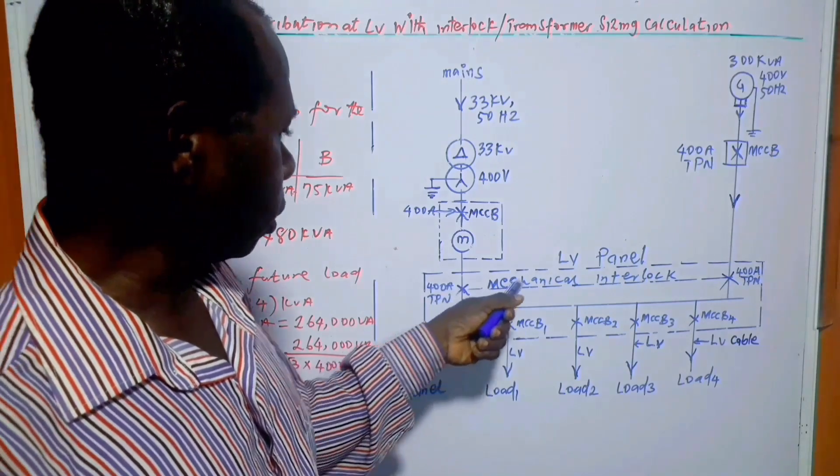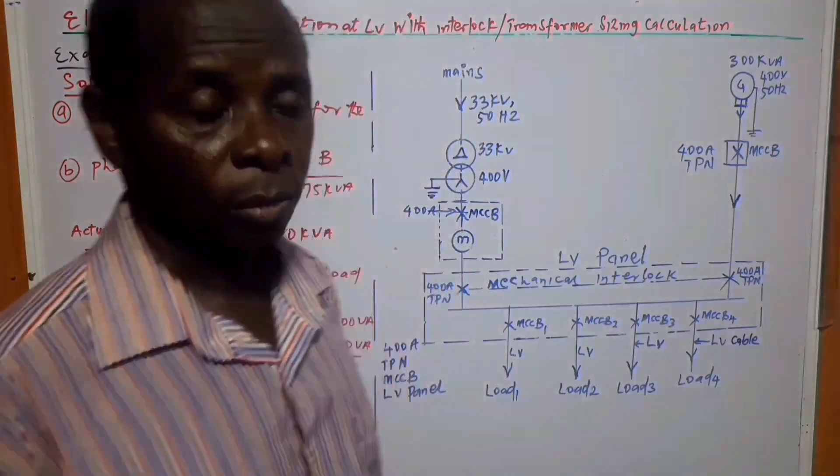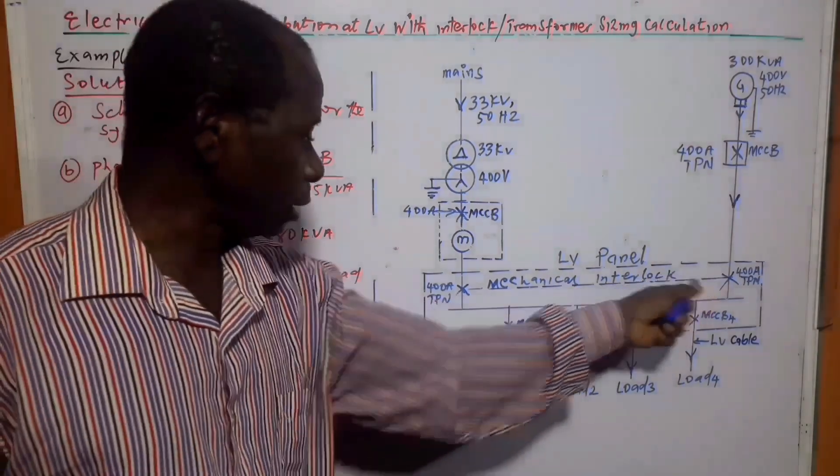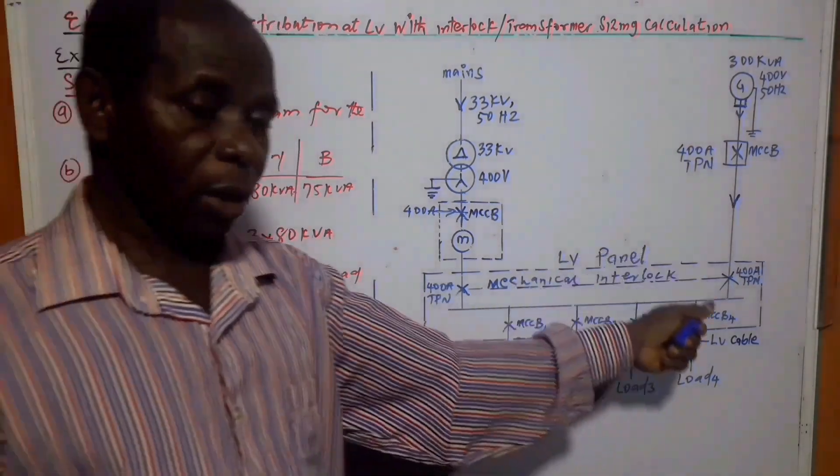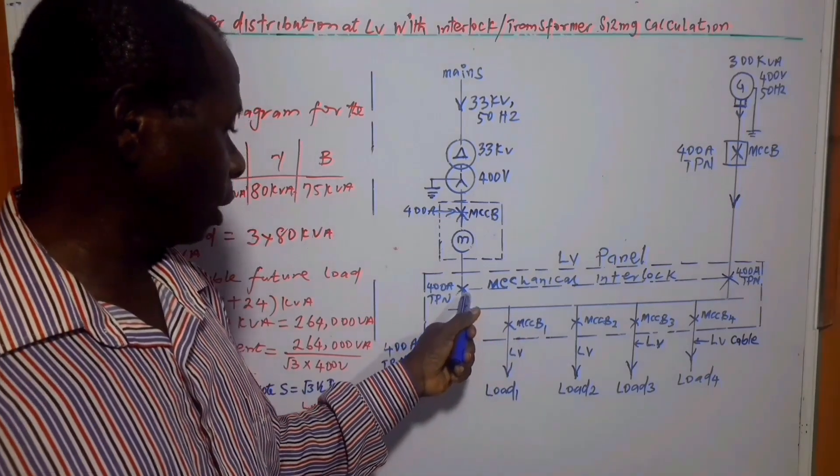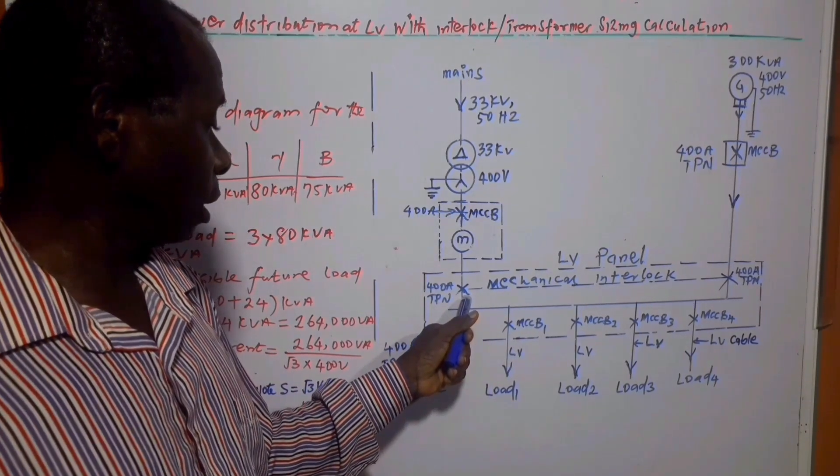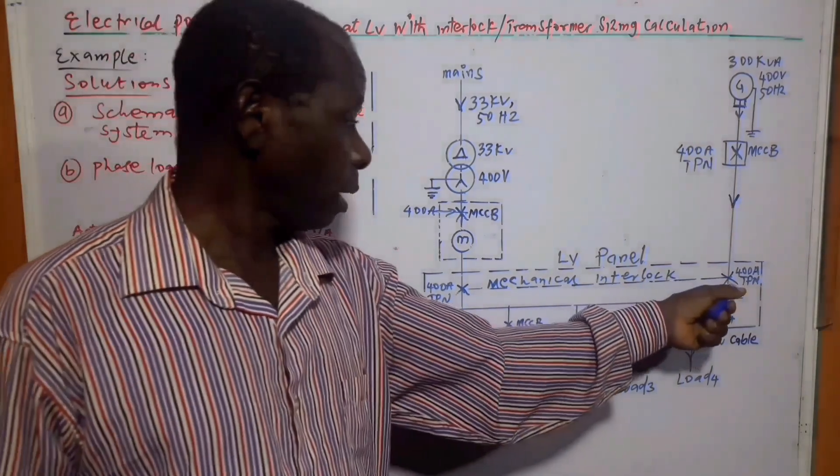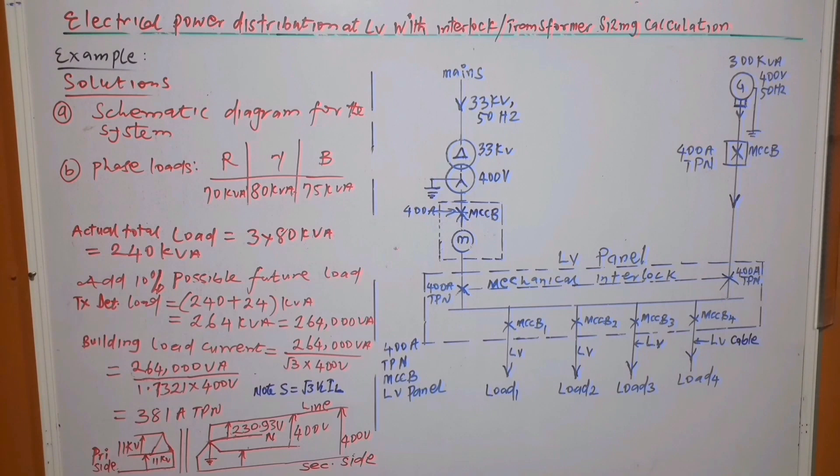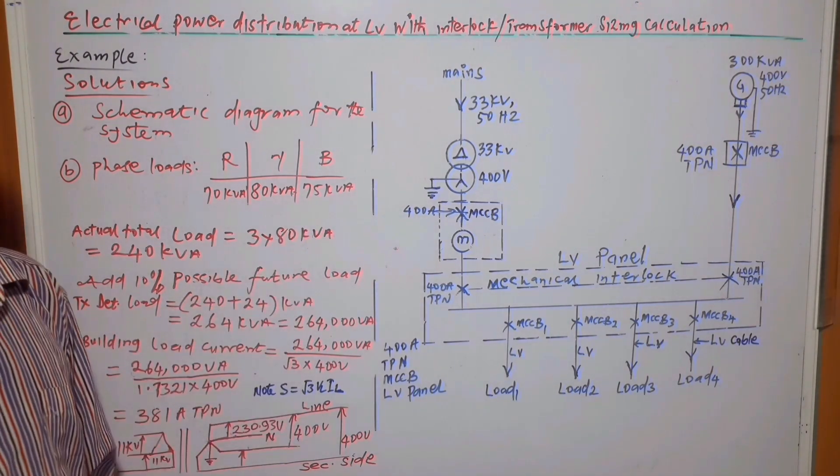And when the power is restored and the generator will be shut down, so the two will alternate. The main circuit breaker will be closed while this one will be opened, and that is the schematic diagram as required by the question.